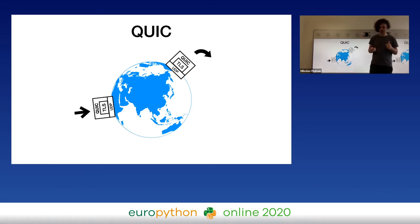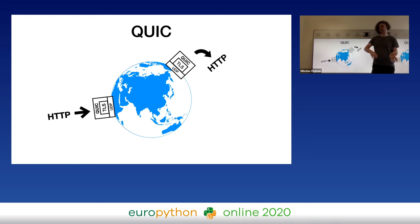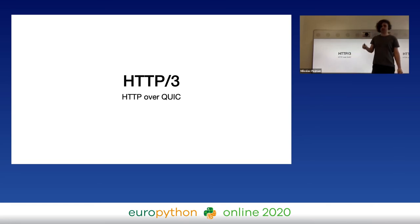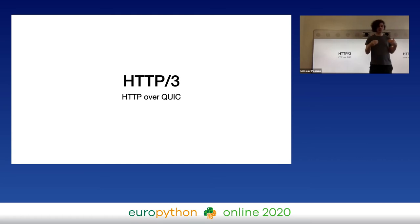Similar to TCP, QUIC can also be used to deliver any message including HTTP — at least in theory or in the future. In practice today, we use QUIC almost exclusively with HTTP. HTTP/3 is HTTP over QUIC — HTTP version 3 is similar to HTTP version 2, but delivered using QUIC, using UDP instead of TCP. That's what makes HTTP/3 so interesting: it uses a completely different transport protocol under the hood than we've used since the 90s.